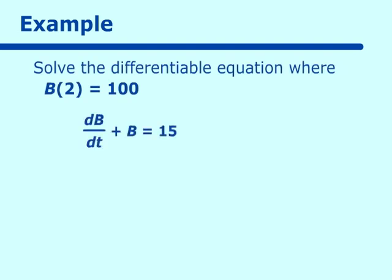Example three: solve db/dt + ab = 15, with b(2) = 100. The db and b are on the same side but connected by addition, not multiplication or division, so we rearrange: db/dt = 15 - b. To avoid a negative in the denominator (since this will become a u-substitution form), factor out a negative: db/dt = -(b - 15). This makes taking the antiderivative much easier.